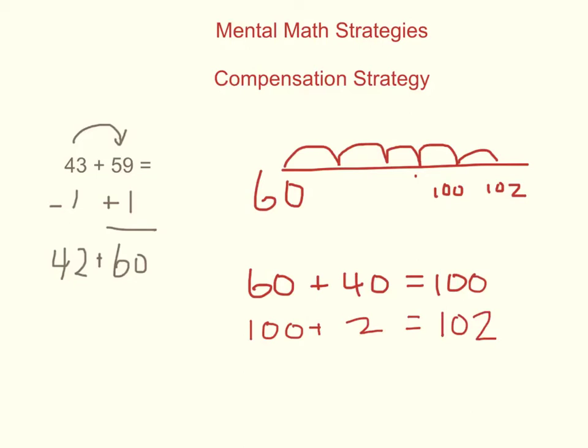Therefore, the answer to the question 43 plus 59 or the answer to the question 42 plus 60 is 102.